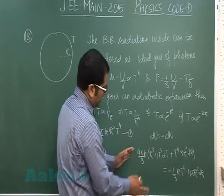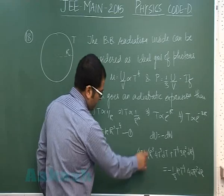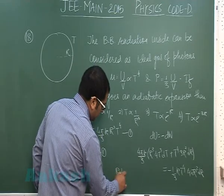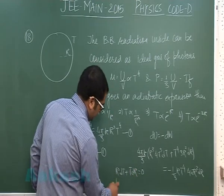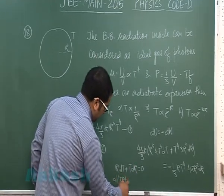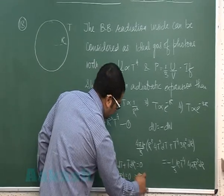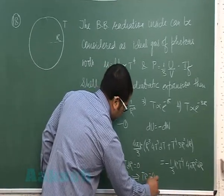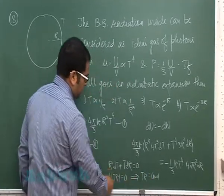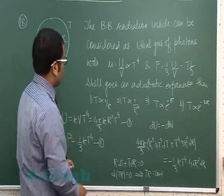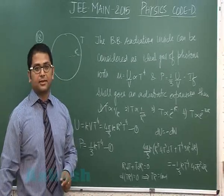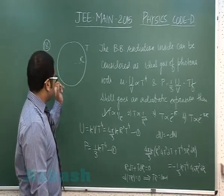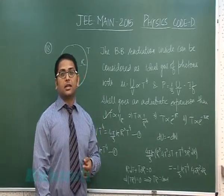It seems a bit lengthy but it's quite easy. When you solve this, you'll get R DT plus T DR equals 0, indicating d(TR) equals 0. This implies TR would be a constant if you integrate this function, meaning temperature is inversely proportional to radius. Now we'll move to question number 19.